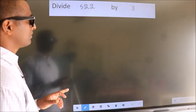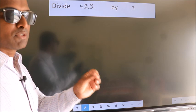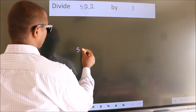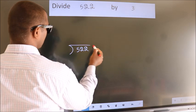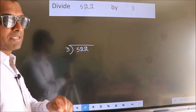Divide 522 by 3. To do this division, we should frame it in this way. 522 here, 3 here. This is your step 1.